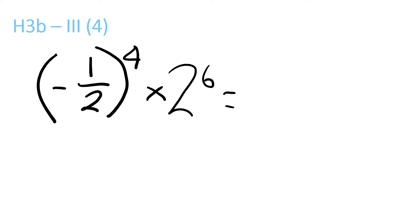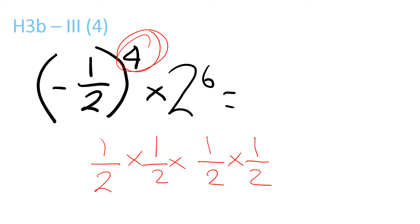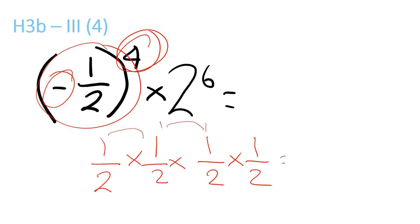For this one, you've got to do a half times a half times a half times a half, because there's a 4 up here — so you've got to times a half, 4 times. But since there are 4 minuses, and 4 is even, it would be a plus, not a minus. So you just take out the minuses this time. So this would equal: 1 times 1 times 1 times 1 is 1, over 2 times 2 is 4, 4 times 2 is 8, 2 times 8 is 16. So that's 1 over 16.